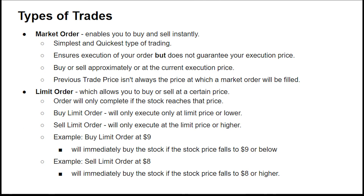Now let's discuss the various types of trades you may execute, starting with a market order. A market order enables you to buy and sell instantly, making it the simplest and quickest type of trade. It ensures execution of your order but does not guarantee your execution price — it will buy or sell at approximately the current price you see on the screen. If a stock is selling at roughly $25, a market buy will get you that stock at about that price, but it isn't guaranteed. The larger the company, the more probable it will execute at that specific price.